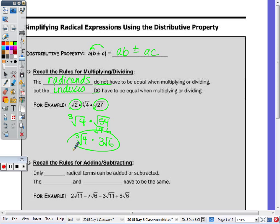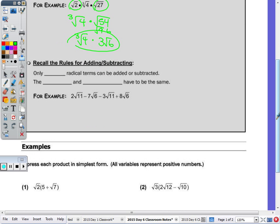Now, since the distributive property involves multiplication and addition or subtraction, we're going to take a look at the rules again for adding and subtracting, which was last class. Remember, only like radicals can be added or subtracted. The index and the radicands do have to be the same. So like would be 2 radical 11 minus 3 radical 11, which is negative radical 11. And then combining the other two like terms, negative 7 radical 6 plus 8 radical 6 is a positive 1 radical 6, or just radical 6.